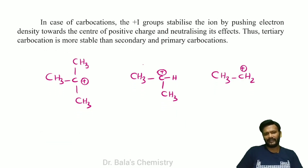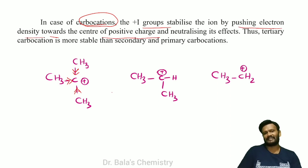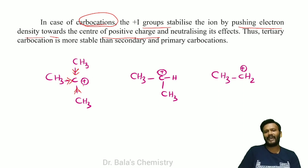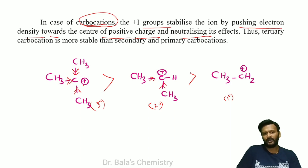In the case of carbocations, a +I group stabilizes the carbocation. With three electron donating groups, the electron density is pushed toward the central positive charge, neutralizing it. That's why 3° carbocations are more stable, 2° are less stable, and 1° carbocations are very less stable — alkyl groups are strong electron donors.